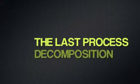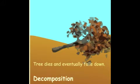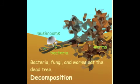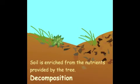The last process is decomposition. Trees die and eventually fall down. Microorganisms or decomposers, such as bacteria, fungi, and worms, eat the dead tree. The leftovers from microorganisms go directly into the soil, then are taken by living plants to help them grow.